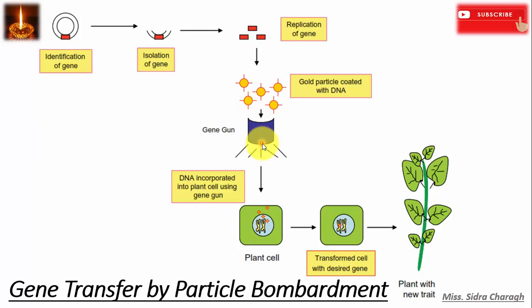The DNA-coated particles are loaded onto a gene gun, and pressurized gas — typically helium — provides the propulsive force. Some of the metal particles then penetrate the cell membrane and deliver the DNA construct into the cell. The plant is then regenerated, and all of the cells will carry the foreign gene and may express it as a new trait.